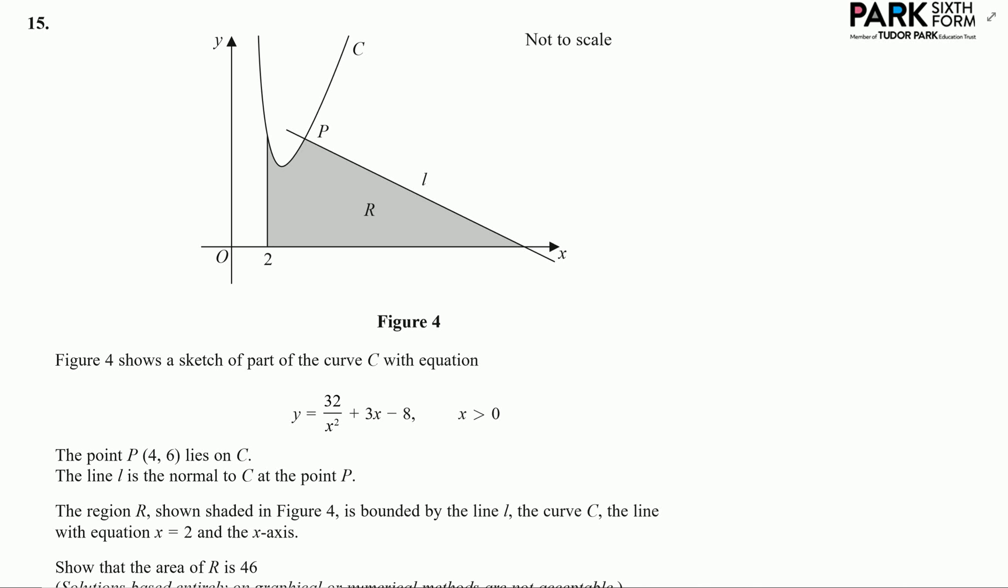And finally, question number 15, and there's certainly no denying that question 13 is a bit of a beast. So we've been given a function, we're told about a point that lies on that function, so I'm just going to add that information to my graph. Here, I know that this is point 4 and that's at 6.